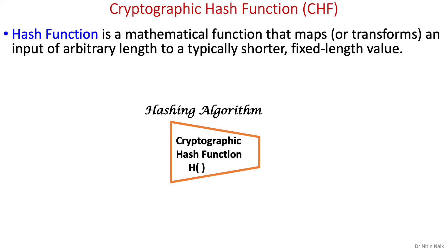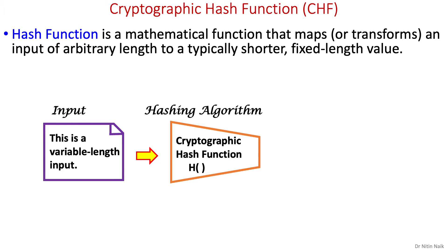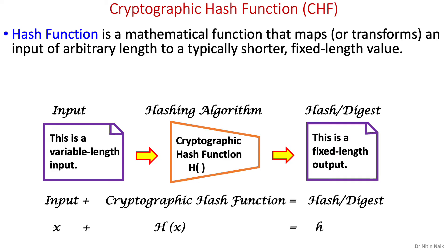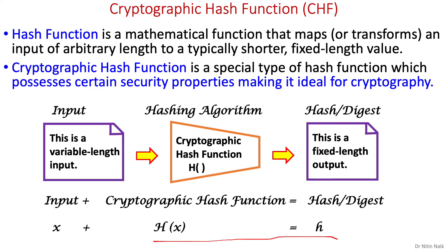As we have already discussed a hash function in the previous video, a cryptographic hash function is a special type of hash function that maps an input of any length to a typically shorter fixed length value. We can express this mapping process as an equation h(x) = h, where x is an input value, uppercase H is the cryptographic hash function, and lowercase h is the output value or hash. A cryptographic hash function possesses certain security properties to provide security guarantees that a non-cryptographic hash function doesn't, therefore making it ideal for cryptography.